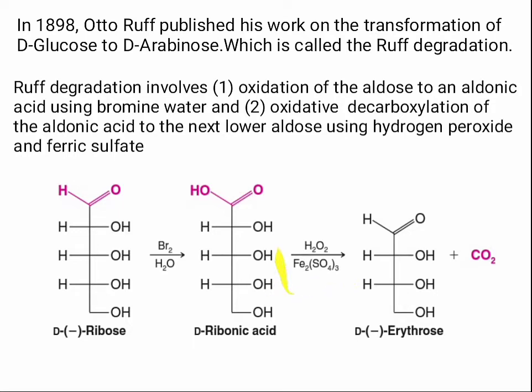Don't be confused with the Fenton reagent. Fenton reagent is the mixture of hydrogen peroxide and ferrous sulfate — that is not ferric sulfate. In the case of Ruff degradation, he used ferric sulfate.